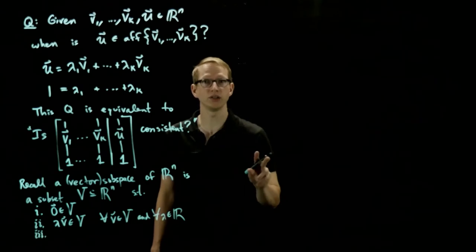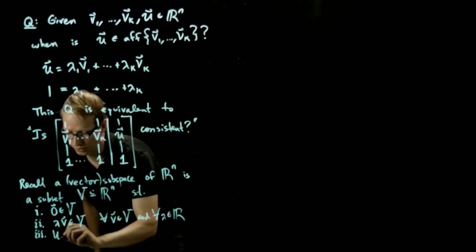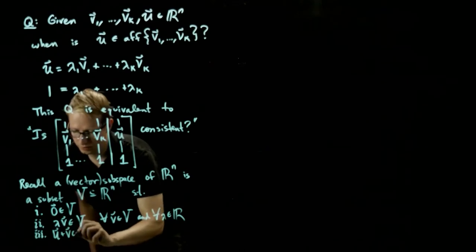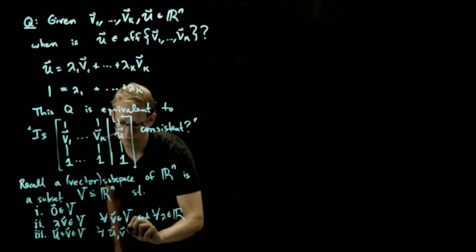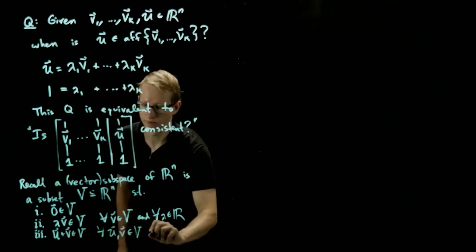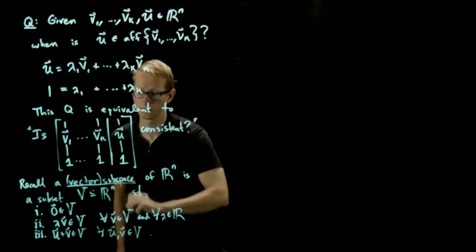The third condition is that if I take any two vectors in V, then the sum of them are in V. So u plus v is in V for all pairs u and v that are already in V. And this is what a vector subspace is.